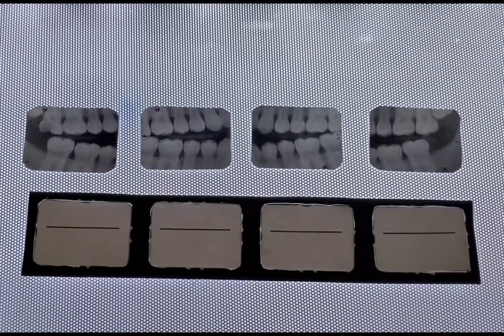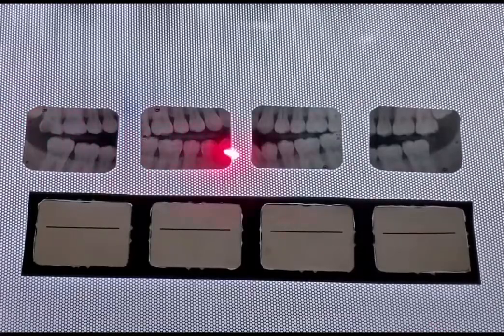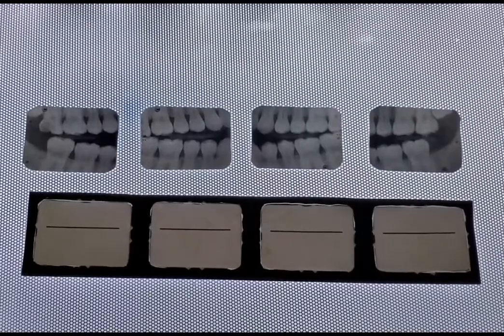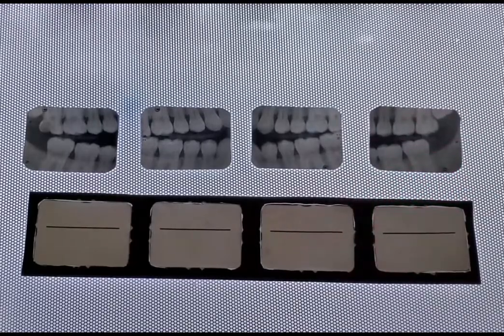Bite-wing radiograph images should be oriented so that the occlusal plane presents as a slight upward curve or smile. Roots of most teeth curve distally. We identify the anatomical landmarks to assist distinguishing radiographs such as the curve of Spee.